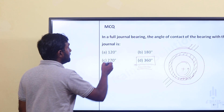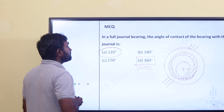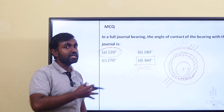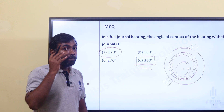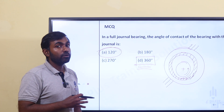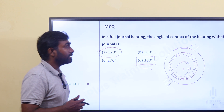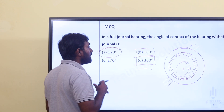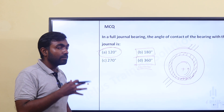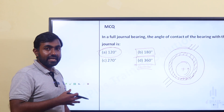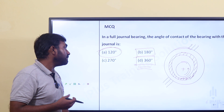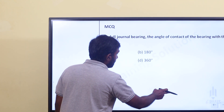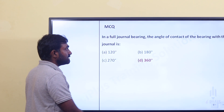Option A is 120 degrees — practically, a partial journal bearing uses 120 degrees. Normally a partial journal bearing is 180 degrees, and practically it is usable at 120 degrees. The answer is 360 degrees for a full journal bearing.